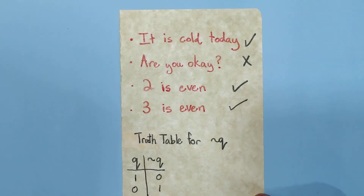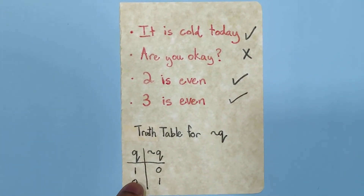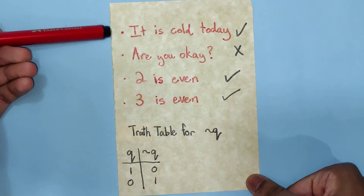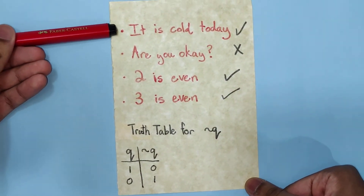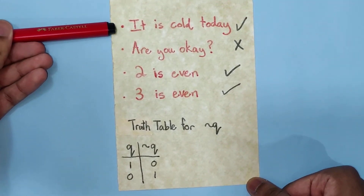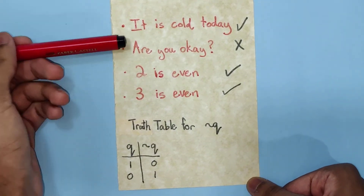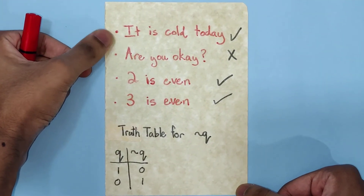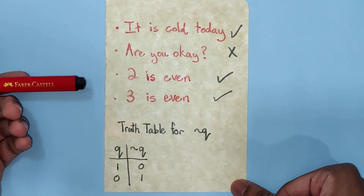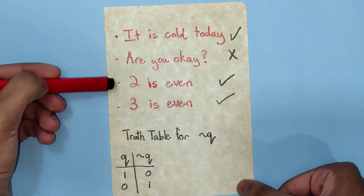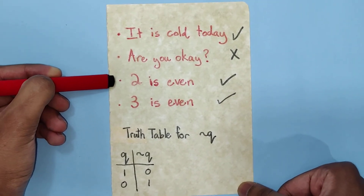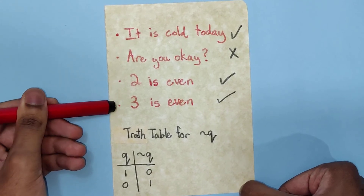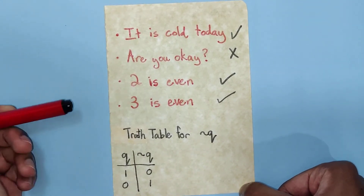Now let's take a look at a couple of phrases and see whether or not they are propositions. The first one: 'It is cold today.' If this was read on a cold day, its truth value would be 1, and if it was not cold, its truth value would be 0. However, it is still a proposition because it is a statement and it can be either true or false. '2 is even' is a proposition and it has a truth value of 1. '3 is even' is also a proposition — it is just a false proposition, because 3 is not even, so its truth value is 0.